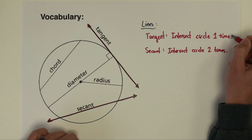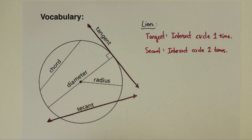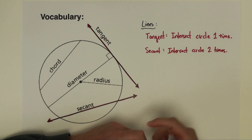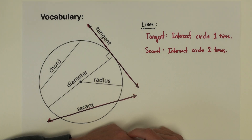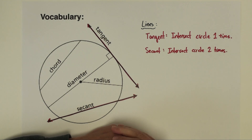We will use tangent lines and secant lines — that vocabulary — as we discuss other shapes, not only in geometry but also in algebra. But for this chapter it's just going to be related to the circle.